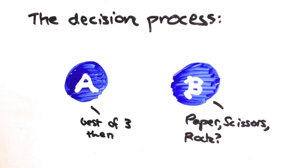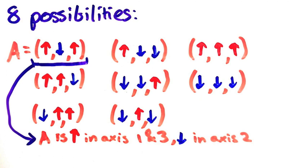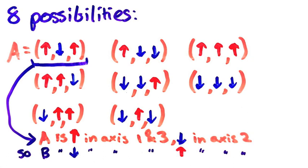All that matters is that each particle, A and B, have decided what their spins are in each of the three directions beforehand. There are 8 possibilities. This one is that A is spin up in axis 1 and 3 but spin down in axis 2. Then of course B is the opposite.